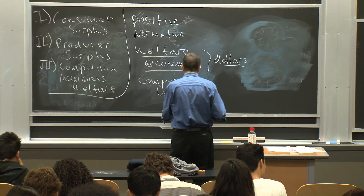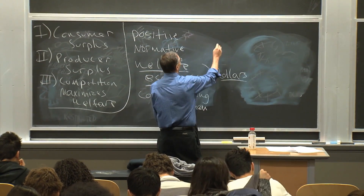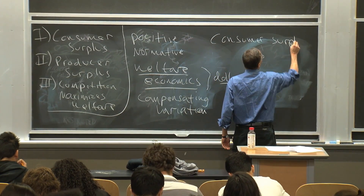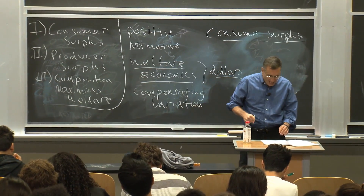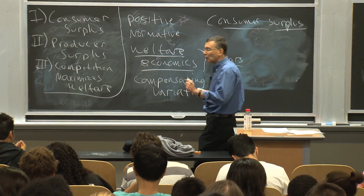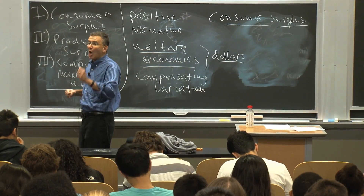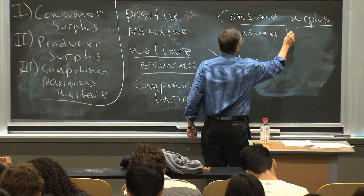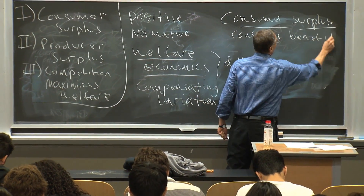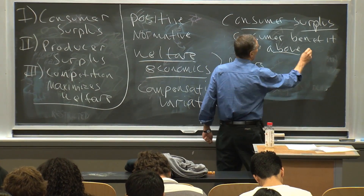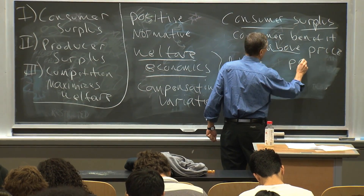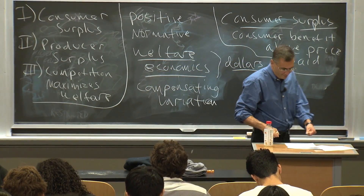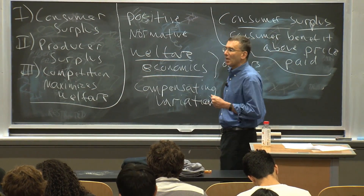Armed with this idea, we can then measure what we're going to call consumer surplus. Consumer surplus is defined as the benefit a consumer gets from consuming a good above and beyond what they paid. So it's consumer benefit above the price paid. That's what we're going to call consumer surplus.